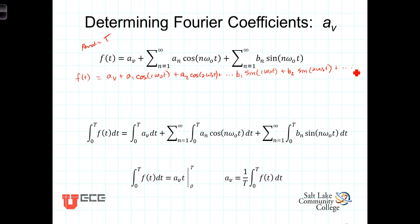Now, our task at the present is to determine or come up with a way of calculating this a sub v term. And to do that, we look at this term as the only constant term. All of the other terms involve sines or cosines oscillating at integer multiples of the fundamental frequency of our periodic waveform.